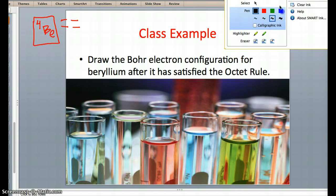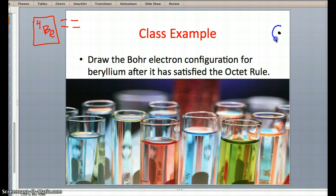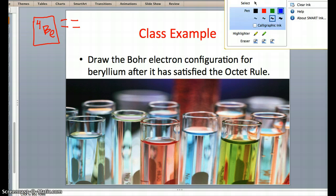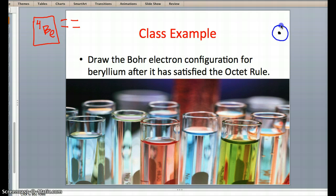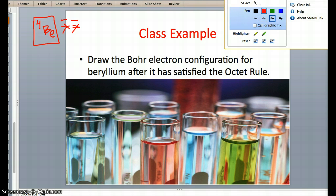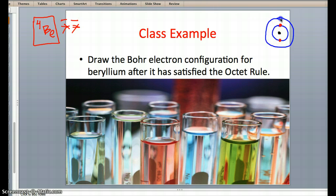We'll have our nucleus, our first electron orbital, which only 2 electrons will fit in - 1, 2. We can cross out these two and move on to the next electron orbital because the first one is filled. We have 2 more electrons, so we put 1 there and 1 there.